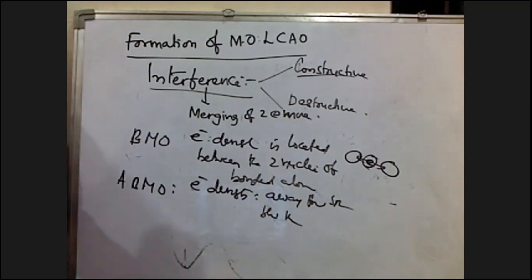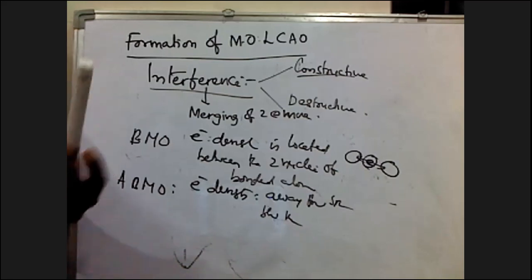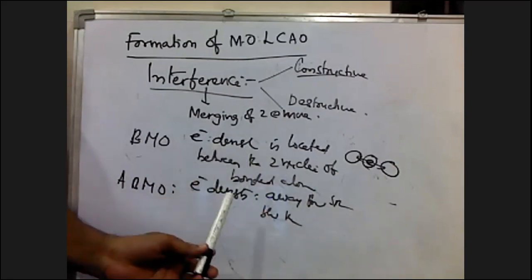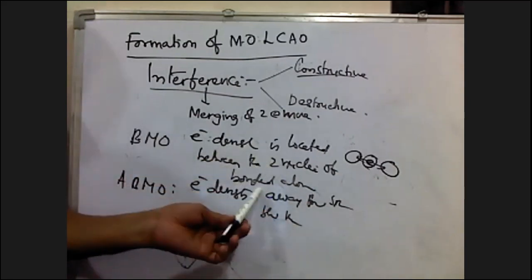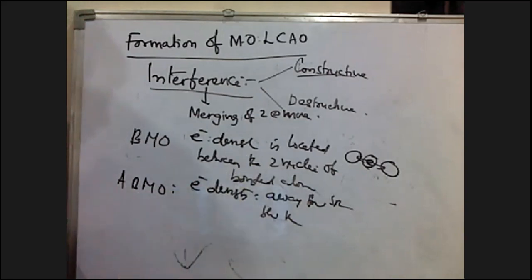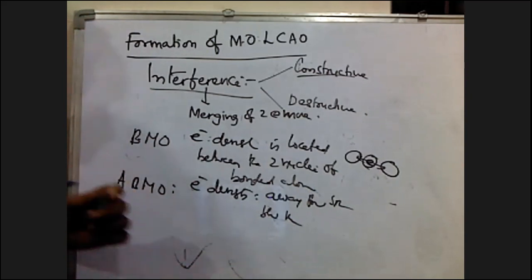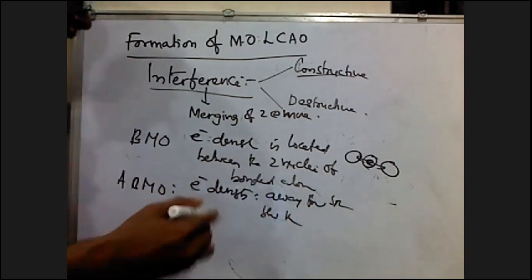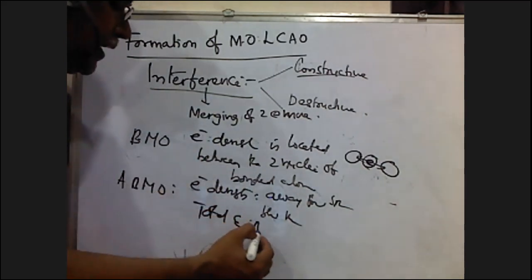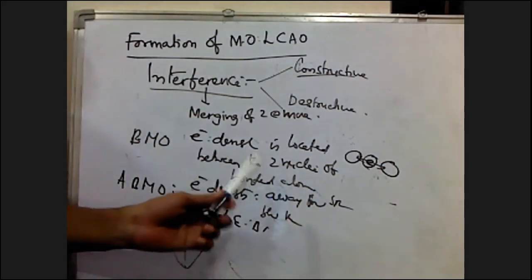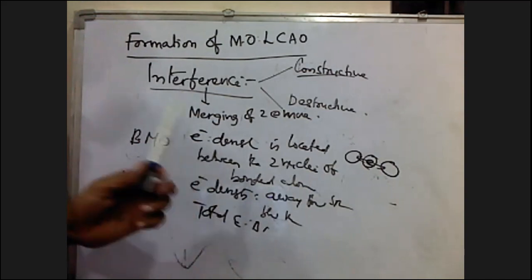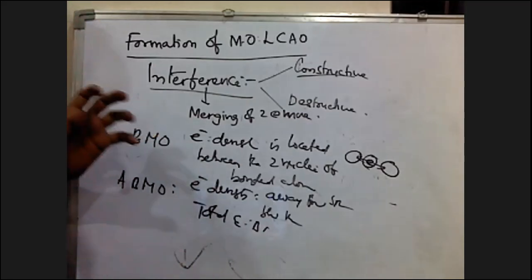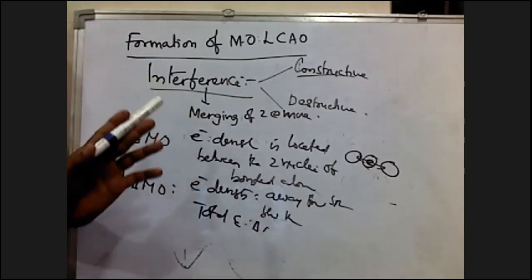The energy of the anti-bonding orbital is raised above the energy of the parent atomic orbitals that have combined, whereas the energy of the bonding molecular orbital is lowered below the parent orbitals. However, the total energy of the bonding plus anti-bonding molecular orbitals remains equal to the energy of the two atomic orbitals from which they are formed. This is how molecular orbitals are formed based on the LCAO approach.